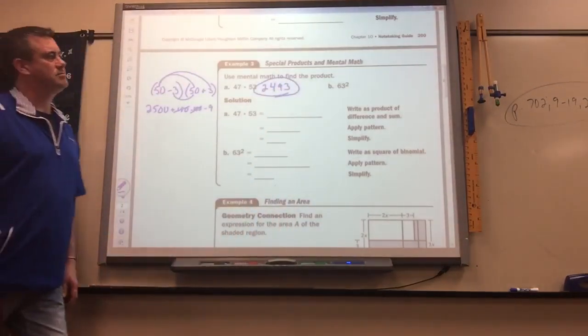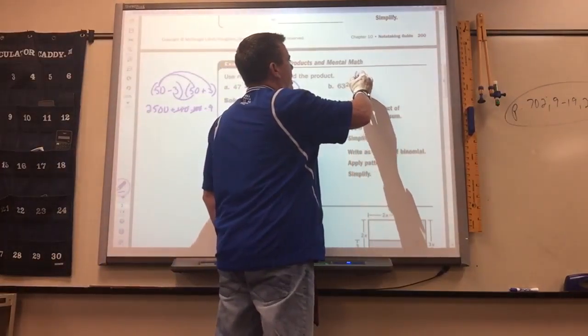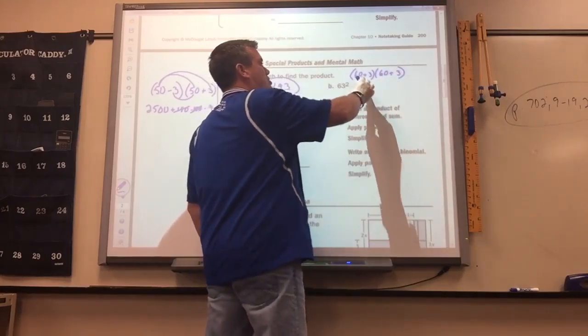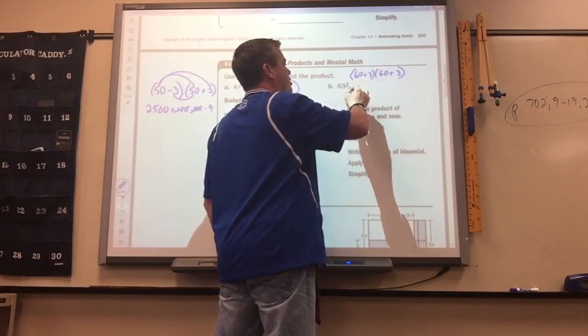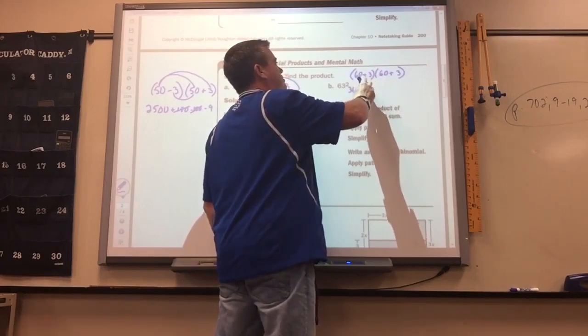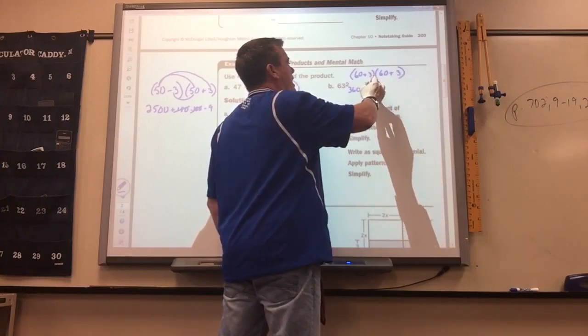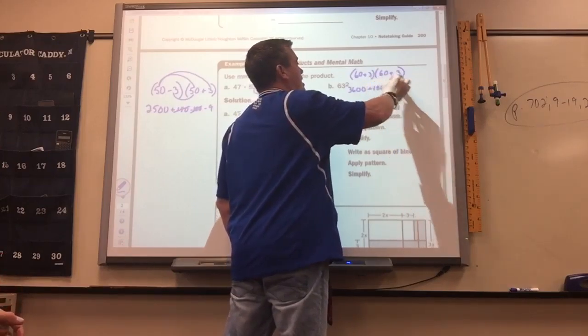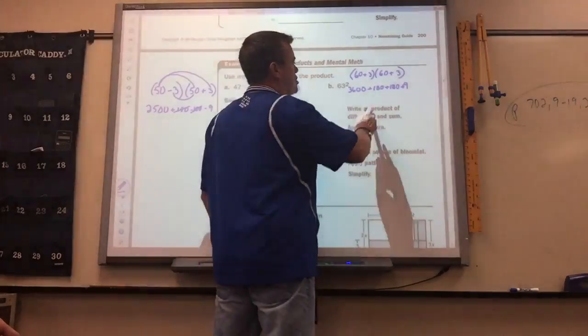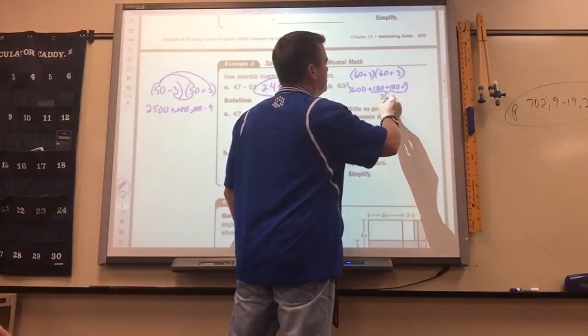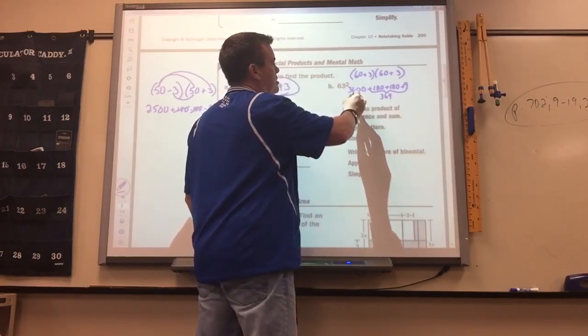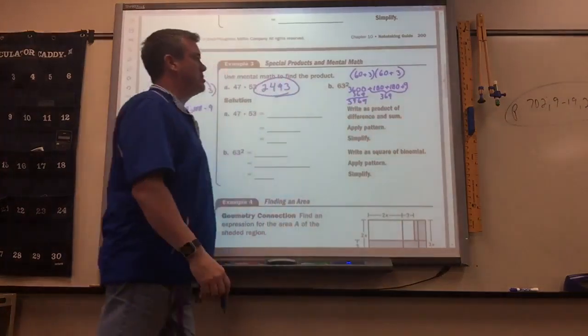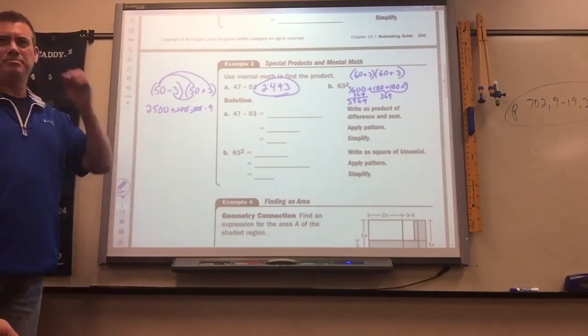63 squared I could write as 60 plus 3 times 60 plus 3. So 60 times 60 is 6 times 6 is 36 plus 2 zeros, 3600. 60 times 3 is plus 180. 3 times 60 is another plus 180. 3 times 3 is 9. So this adds up to 369. So you add that on to 3600: 3969.